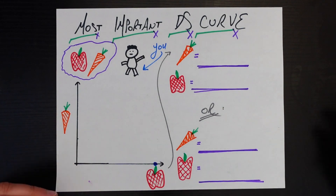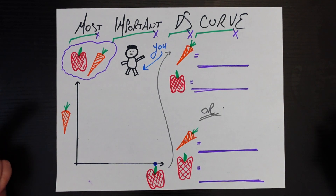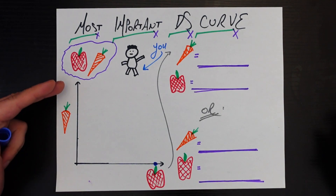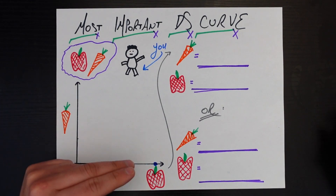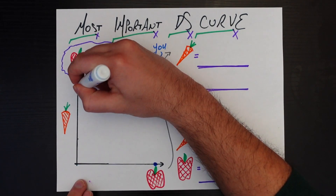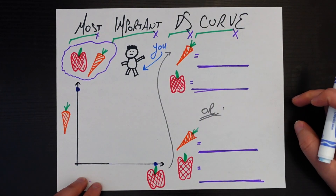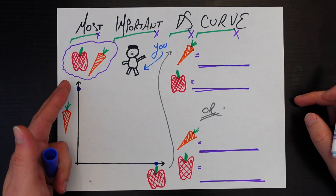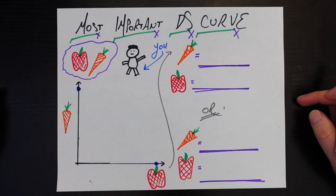Now let's say you approach it from the exact opposite angle — you say carrots are the future, so you're going to produce exclusively carrots. You take all those resources you were spending on apples and put them toward carrots. This blue dot represents what happens in the universe where you're growing exclusively carrots — the x-axis is zero, so you're growing no apples.